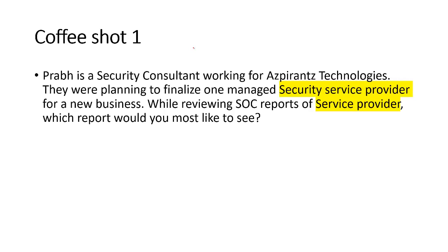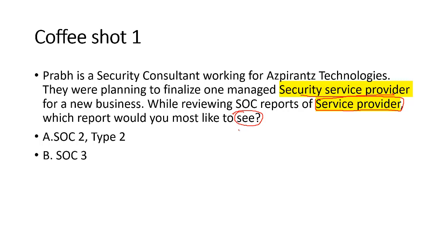Prab is a security consultant working for Aspirants Technology. They were planning to finalize one managed security service provider for their new business. While reviewing SOC reports of the service provider — keyword here is 'service provider' and 'security service provider' — which report would you most likely see? Options: A) SOC 2 Type 2, B) SOC 3, C) SOC 1 Type 2, D) SOC 2 Type 1.